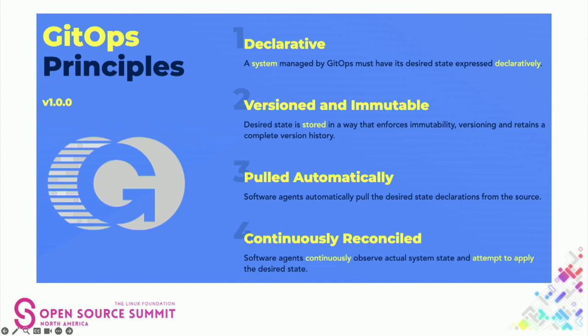The third principle is that software agents automatically pull the desired state declarations from the source. This is less about push versus pull model and more about there being something that's listening to your source of truth and applying the manifests. The fourth one is that software agents continuously observe actual system state and attempt to apply the desired state — so beyond just pulling sources, it's actually continuously applying it. This gets you away from things like configuration drift and bad actors.